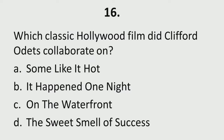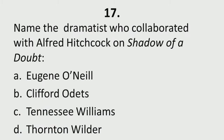Question 16: Which classic Hollywood film did Clifford Odets collaborate on? A. Some Like It Hot, B. It Happened One Night, C. On the Waterfront, D. The Sweet Smell of Success. Clifford Odets was one of the greatest ever American playwrights and, like most intellectuals of that time, dabbled in Hollywood and worked on quite a few films. Question 17: Name the dramatist who collaborated with Alfred Hitchcock on Shadow of a Doubt. A. Eugene O'Neill, B. Clifford Odets, C. Tennessee Williams, D. Thornton Wilder.